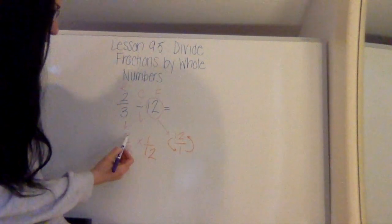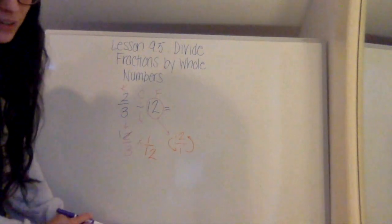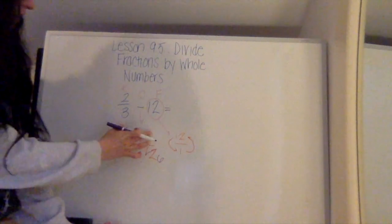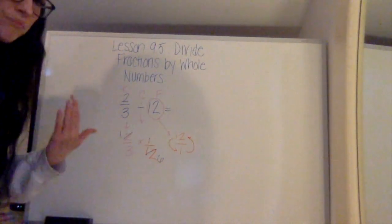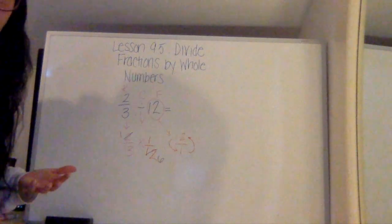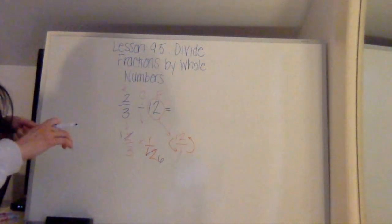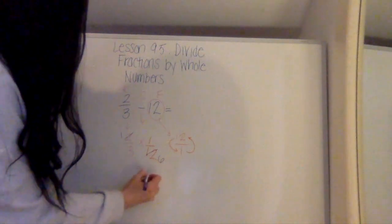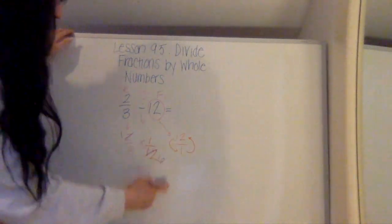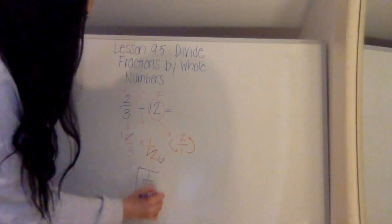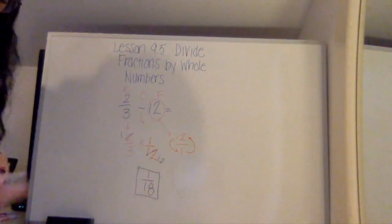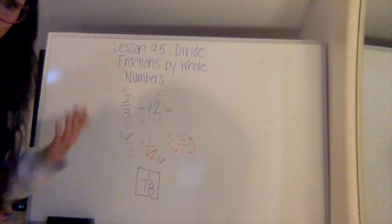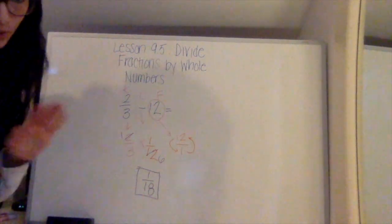So I know that 2 can be divided by 2, and that gives me 1. And I know that 12 can be divided by 2, and that gives me 6. Looking in the opposite direction, the 1 and the 3, they're both prime numbers. They don't have anything in common besides 1. So now I can begin to multiply straight across. 1 times 1 is 1, and 3 times 6 is 18. And I get my final answer of 1/18. I know that that's fully simplified, because the numerator is 1. That's a unit fraction, and unit fractions are always fully simplified.